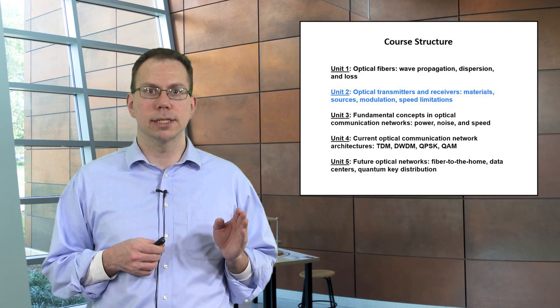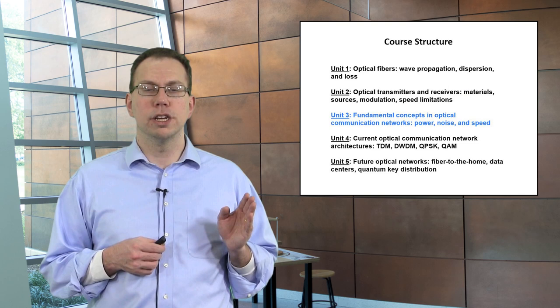The second unit will talk about the basic components on both ends of the fiber, the transmitters and receivers, including the sources such as lasers, modulation, and the speed of the modulation.